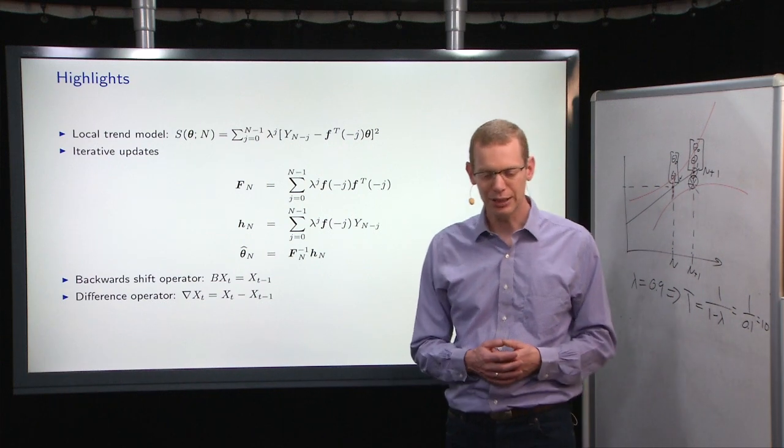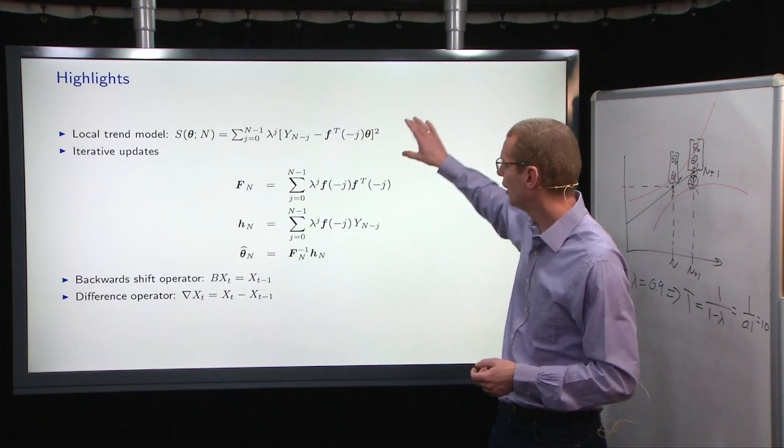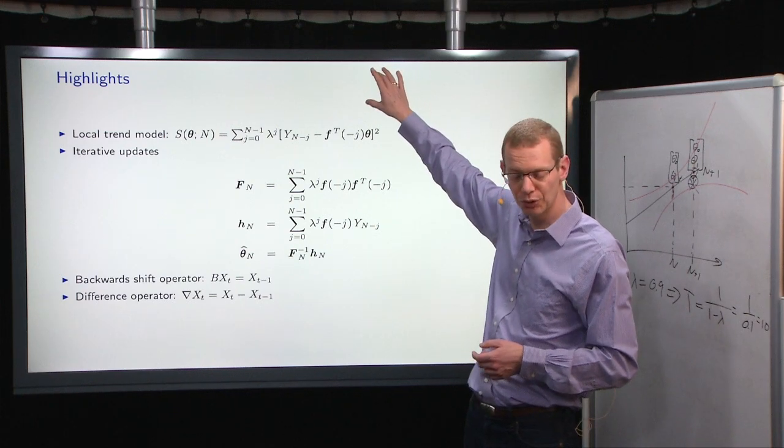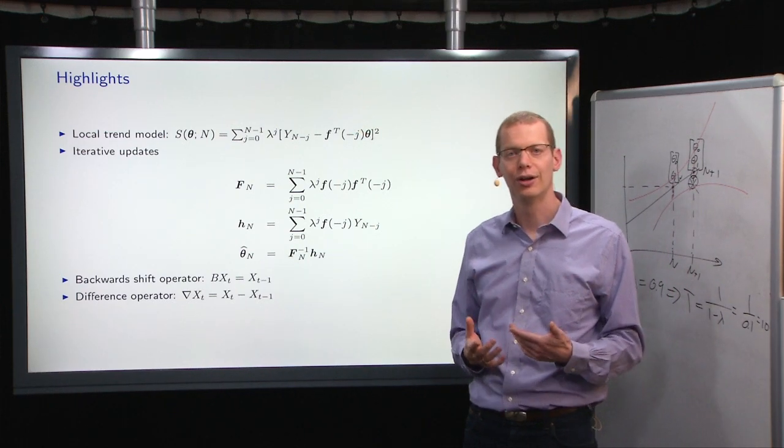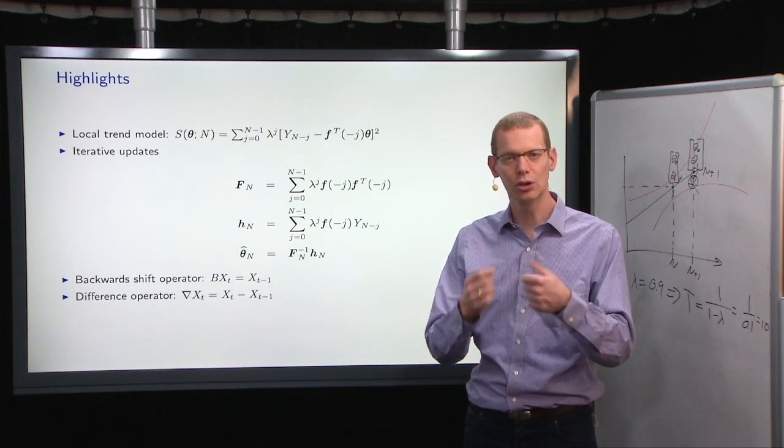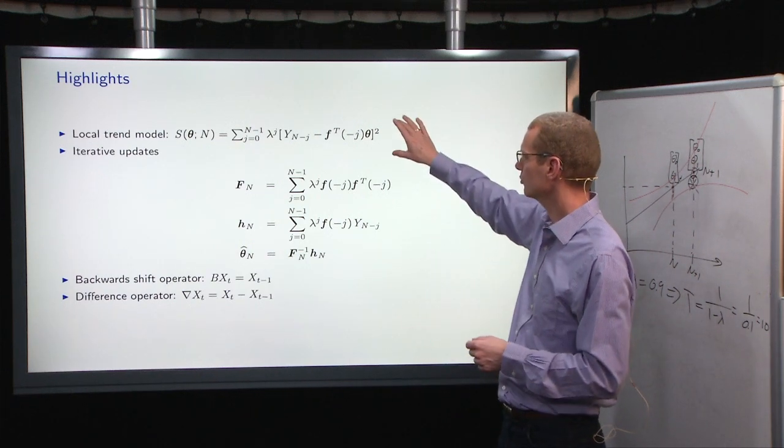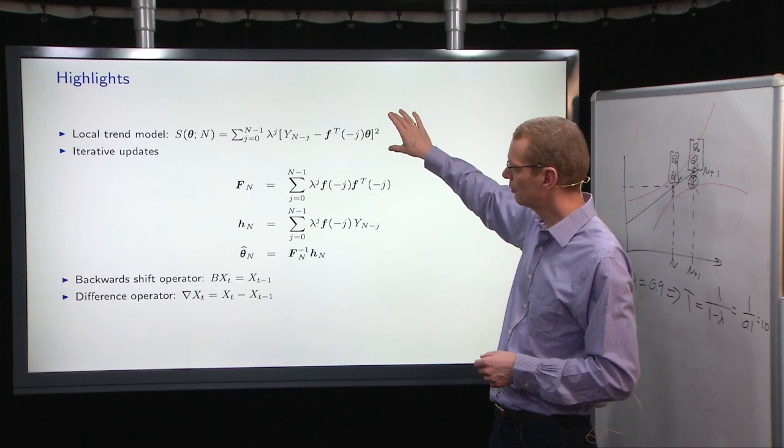So what have we covered today? Well, we have looked at simple exponential smoothing, which is essentially a local trend model for just predicting the mean values. It's a local mean model.